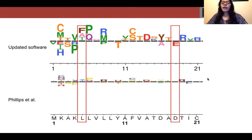We can ignore the heights of all the different mutations and focus only on the mutations present. For example, we can see that this F mutation found in my analysis is absent in the analysis using the older software. We can also see a similar result here.